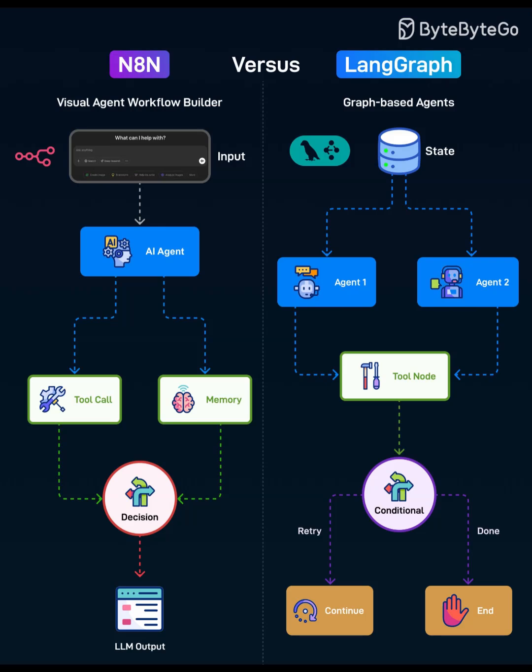Choosing the right tool. Pick N8N for internal automations — fetch from a CRM, summarize with an LLM, push to Slack, log to a sheet — done in an afternoon. Pick LangGraph when stateful reasoning matters: RAG with guarded tool use, code execution with sandboxes, or multi-agent review cycles where failure handling is key. Many teams prototype in N8N, then graduate critical paths to LangGraph for reliability.